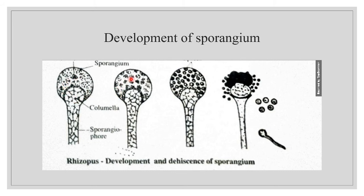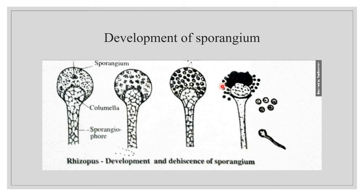After the formation of the semicircular partition, the outer dense region becomes the sporangium and the inner central region is called the columella. Within the sporangium, the protoplasm undergoes several divisions and forms numerous bits, each containing 2 to 10 nuclei. Each bit secretes a wall around itself, thus becoming a multinucleate spore called a sporangiospore. These mature spores are black in color.